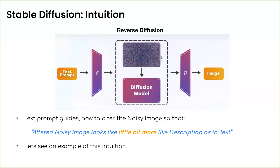In simplified terms: you estimate the noise in the current image and reduce it. The image you have after one iteration is a slightly altered, less noisy image that looks a little more like the description in your text. So the intuition is: take the text, estimate the noise in the current image, and literally subtract that noise from the current image to find a less noisy image.